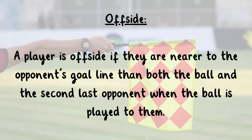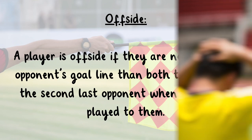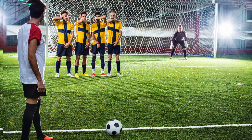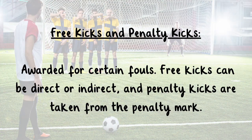Offside: a player is offside if they are nearer to the opponent's goal line than both the ball and the second last opponent when the ball is played to them. Fouls and misconduct: free kicks and penalty kicks are awarded for various fouls and misconduct. Yellow and red cards are used to caution or send off players. Free kicks and penalty kicks: awarded for certain fouls, free kicks can be direct or indirect, and penalty kicks are taken from the penalty mark.